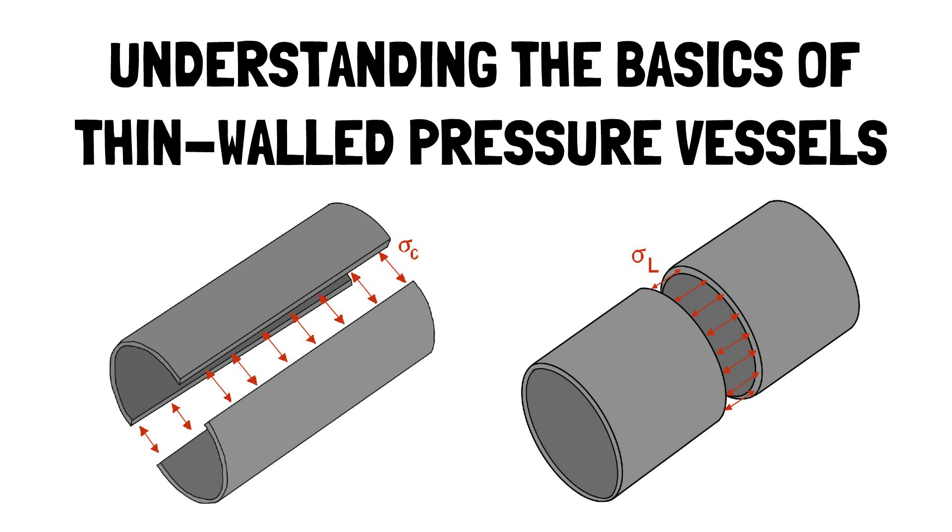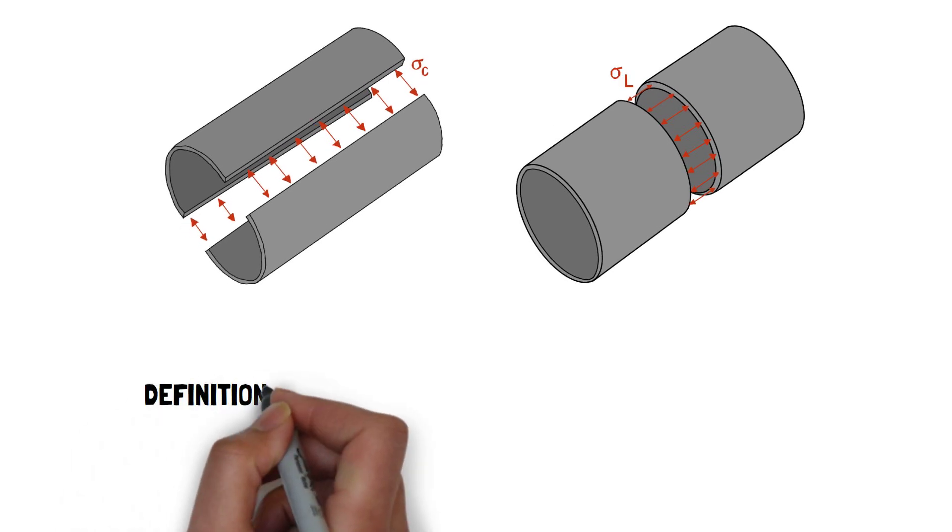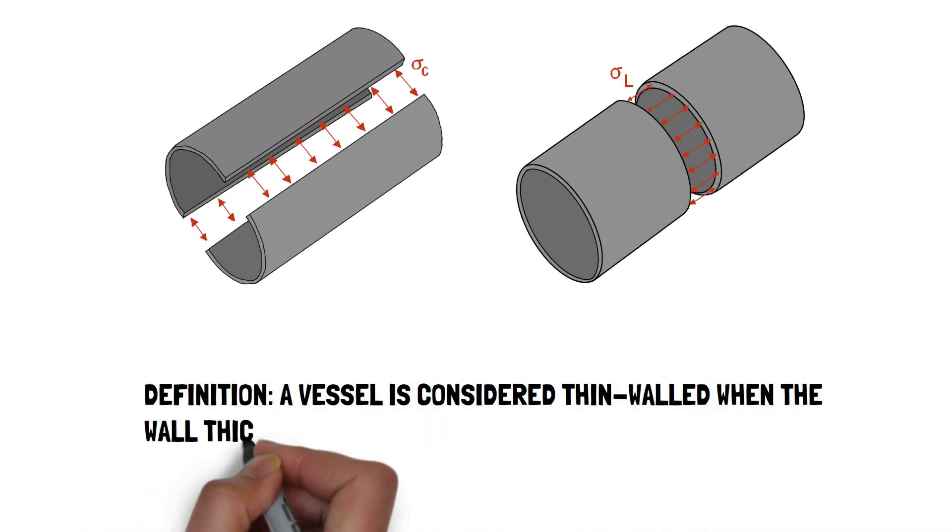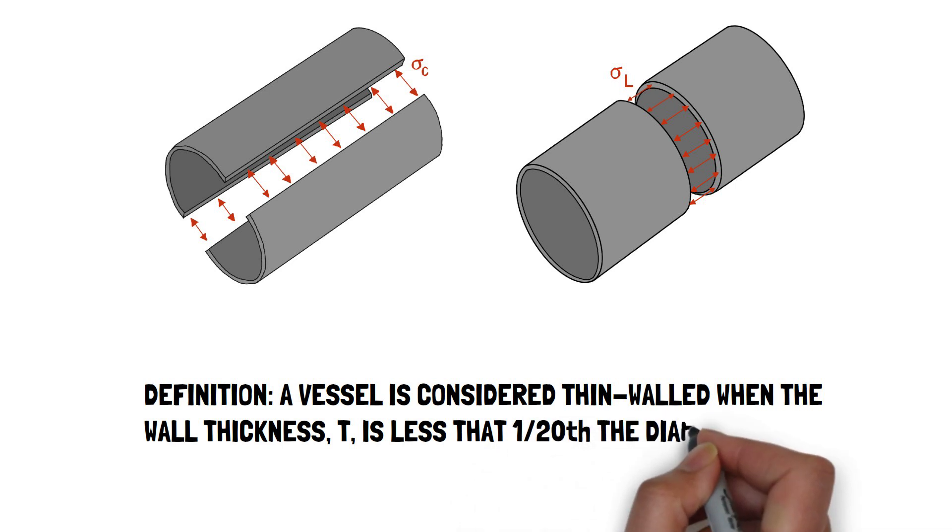But what exactly are they and where are they used? Well, a vessel is considered thin walled when the wall thickness T is less than 1/20th of the diameter.